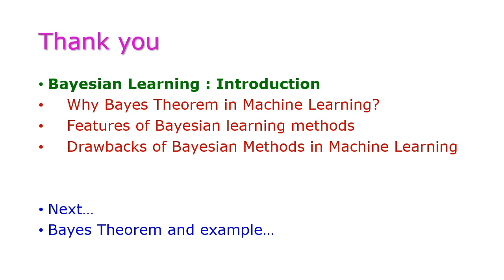Up to this point, we have seen why Bayes theorem is important in machine learning, the features of Bayesian learning methods, and the drawbacks of Bayesian methods in machine learning. In the next class, we will see Bayes theorem and one example for it. Thank you.